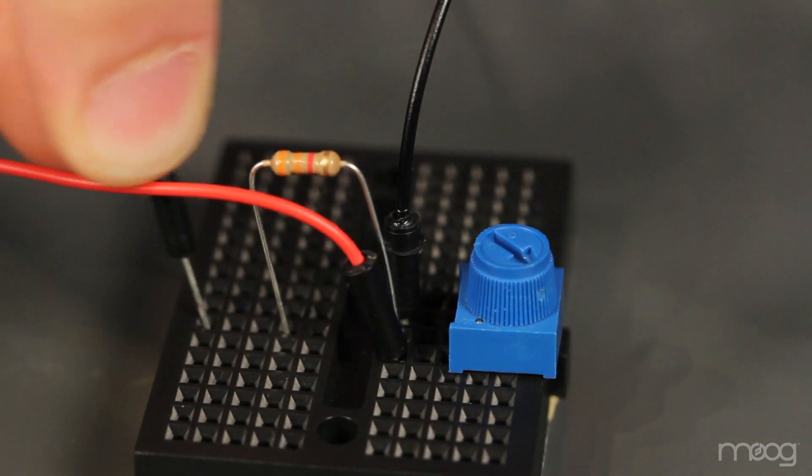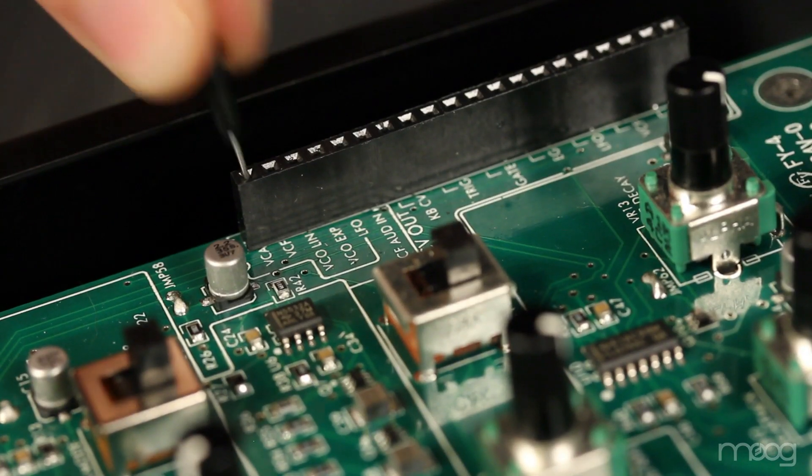For the volume control, we'll want to run our signal from the 3.3K resistor into the VCA in. Now's a good time to double check all your connections. If they're all correct, it's okay to plug in your Werkstatt.